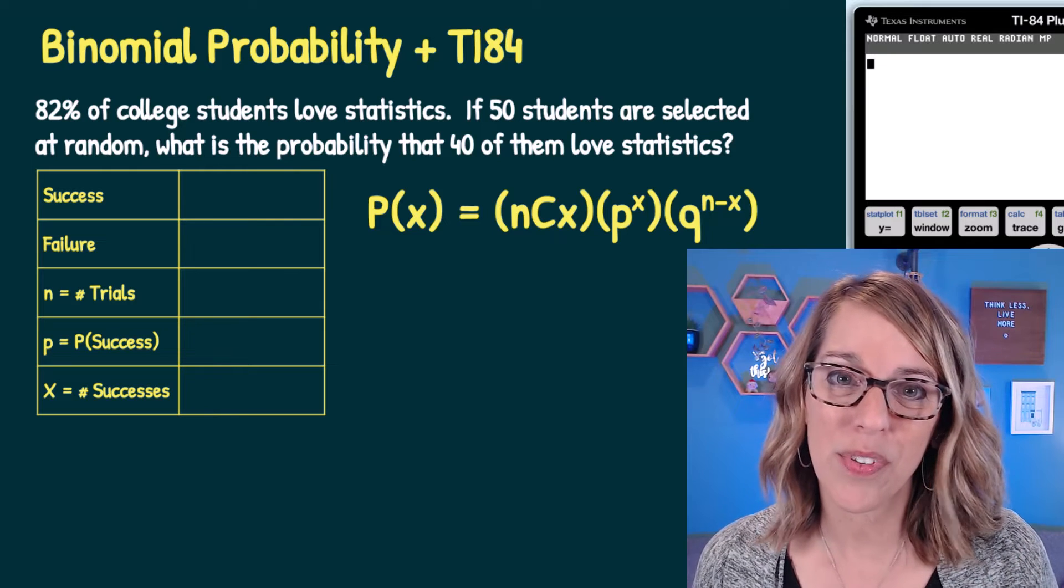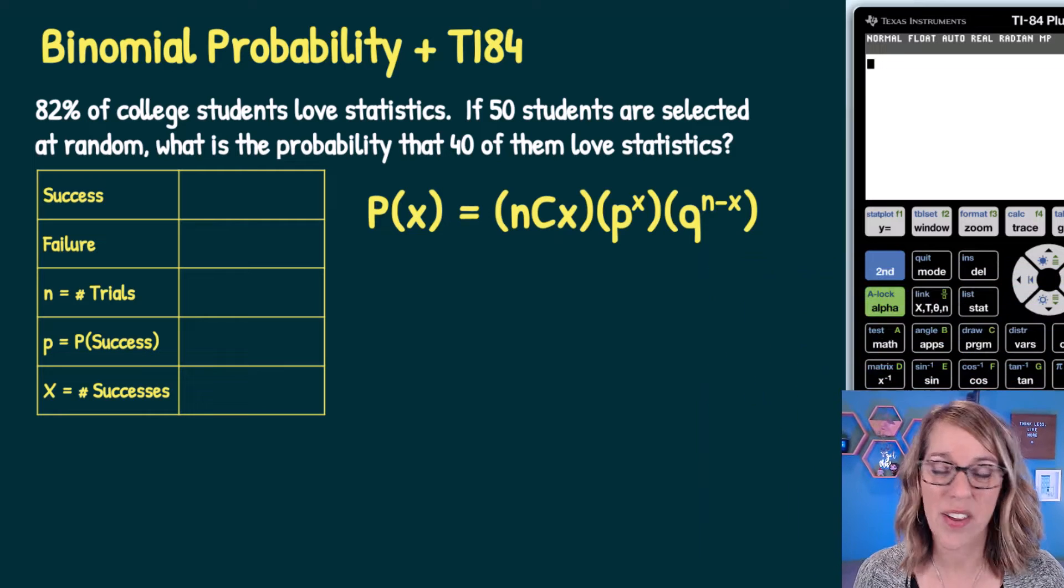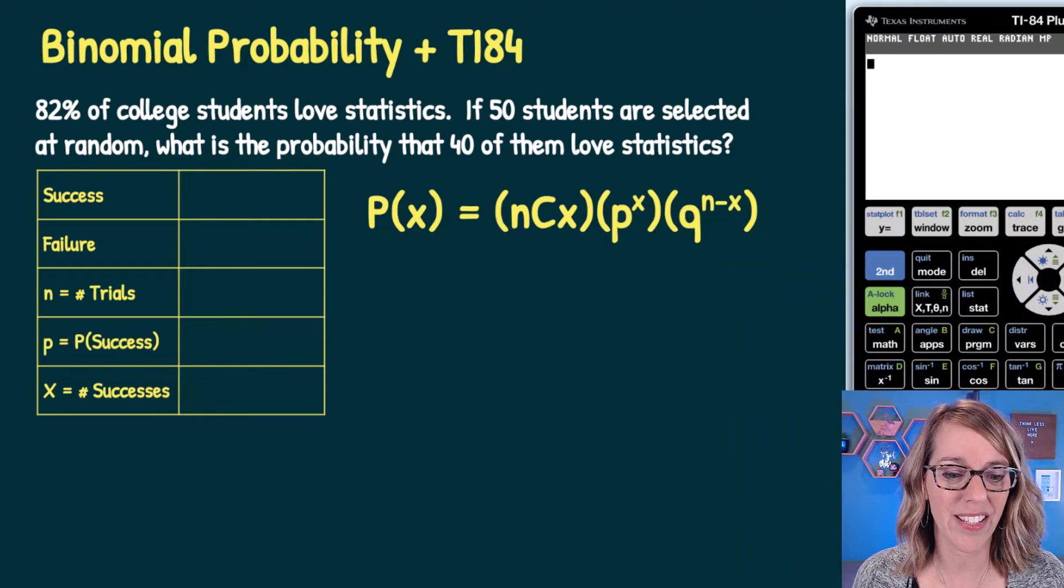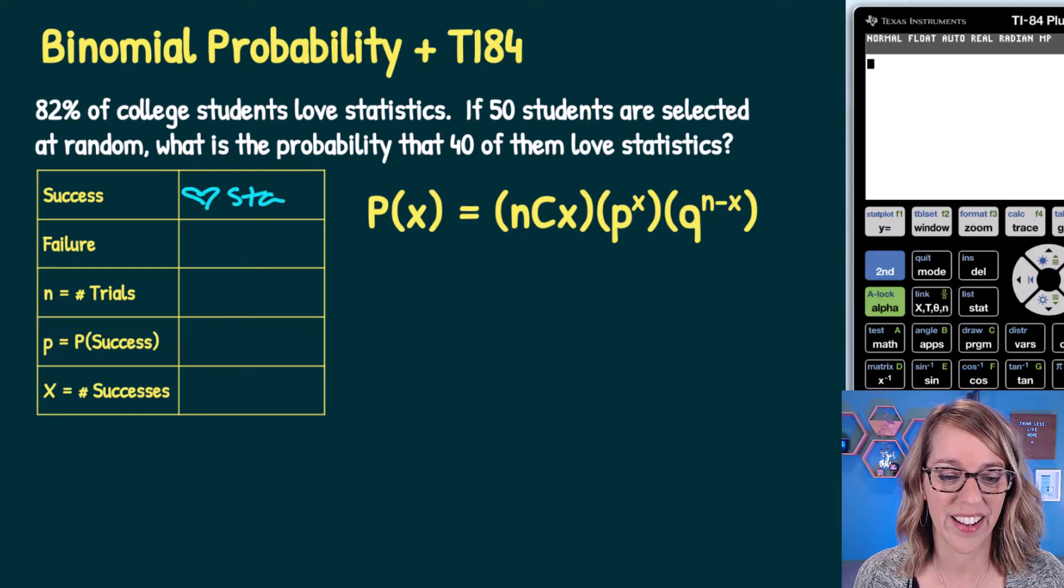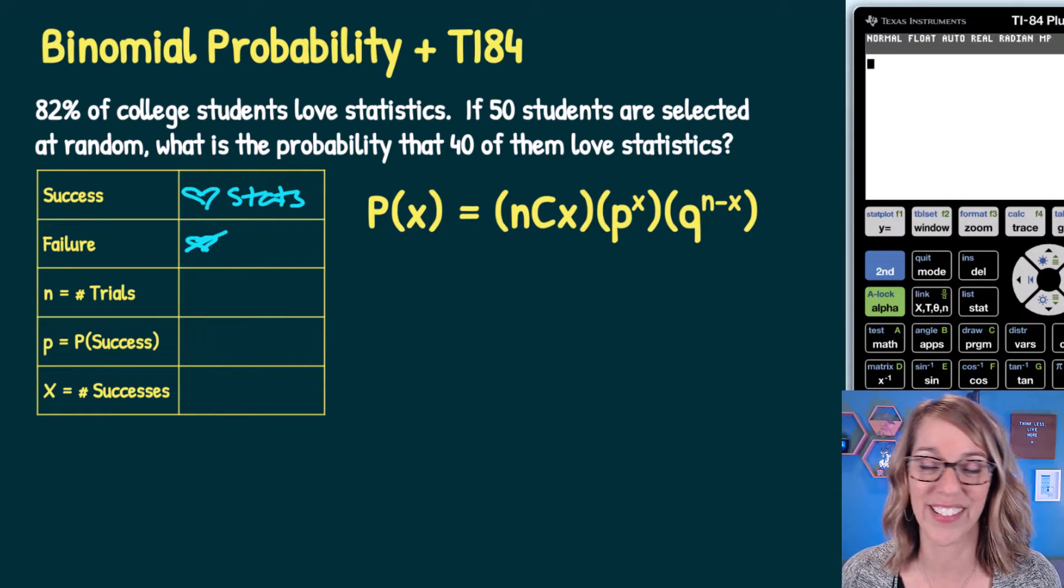I'm going to go through this binomial experiment and identify the pieces needed to plug this into the calculator. First, what is a success? A success is a student who loves stats, and a failure is a student who doesn't love stats.